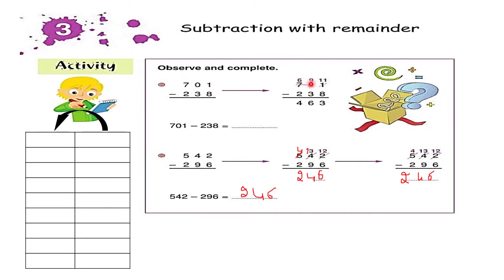We have 701 minus 238. We have to start from the right of the operation. We have to subtract 8 from 1. We cannot subtract 8 from 1 because 1 is smaller than 8. So we borrow 1 from the 0 here to put it beside the 1 here and we arrive to 11. And 11 is acceptable because 11 is bigger than 8, so we can subtract 8 from 11.